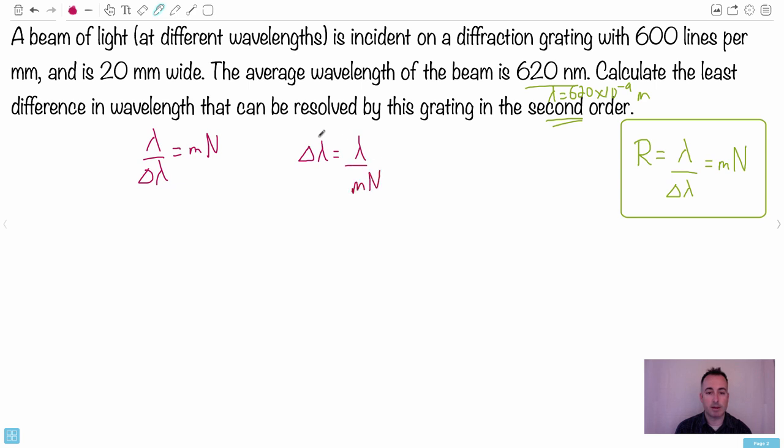So if I just rearrange, then I have delta lambda (Δλ). Let's see, I put this up at the top, that means the MN can come down at the bottom. That's going to be lambda over MN (Δλ = λ/MN). This is what I'm going to need to do. I know my wavelength - it's 620 times 10 to the minus 9 meters, so that's nice.